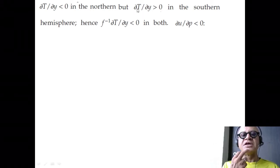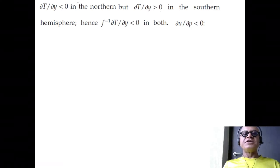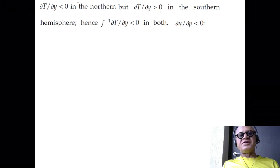So even though temperature decreases from the equator to the south pole, y is pointing in the northern hemisphere direction, so the dT/dy becomes greater than zero. But f is also flipping sign in the hemisphere across the equator. So one over f times dT/dy is less than zero in both hemispheres, which means from our thermal wind relation, dU/dP, the geostrophic shear in the pressure coordinate has to be less than zero in both hemispheres. What is dU/dP less than zero?